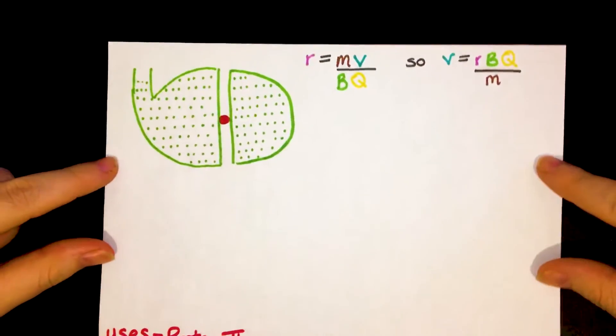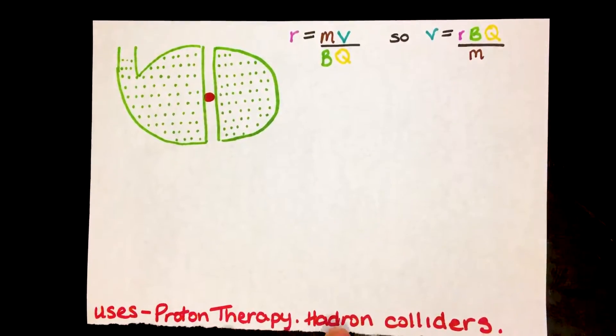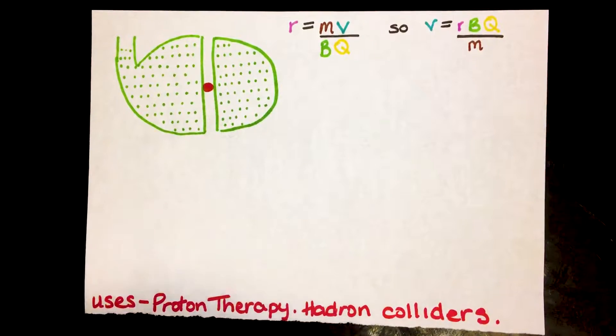So if we're trying to accelerate a proton we have to use this machine called a cyclotron. As it says at the bottom we can use this in proton therapy and we use them in hadron colliders, so CERN uses a kind of example of this.